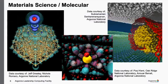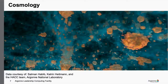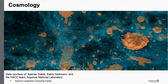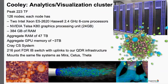A couple of examples of material and molecular science — we partner with a number of different folks, mostly here at Argonne but also from other institutions. Cosmology is a large user of our system, and we collaborate with the HACC team on visualization of their data and use of some of our tools for that visualization.